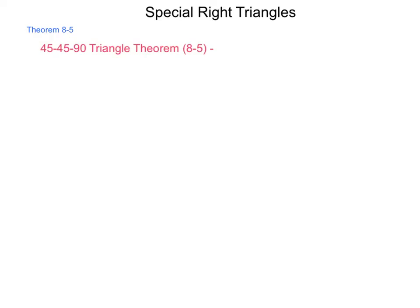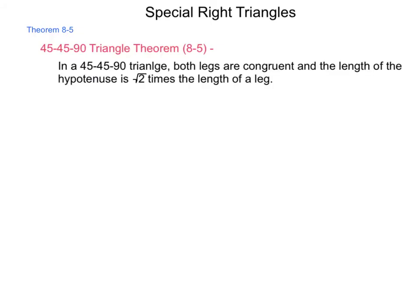With our background in the Pythagorean Theorem, we're going to look at special cases for right triangles. The first is the 45-45-90 triangle, which gives us Theorem 8-5. This theorem states that in a 45-45-90 triangle, both legs are congruent and the length of the hypotenuse is √2 times the length of a leg.